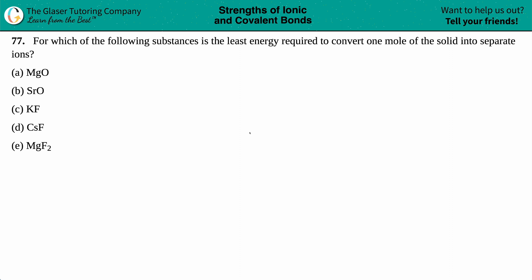Number 77: For which of the following substances is the least energy required to convert one mole of the solid into separate ions? We have a multiple choice with five options - we have to pick the correct one. Which one has the least energy: MgO, SrO, KF, CsF, and MgF2?